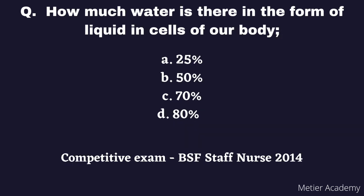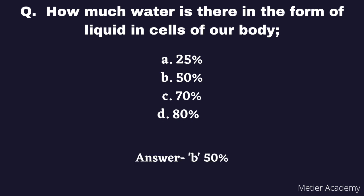The next question is: How much water is there in the form of liquid in cells of our body? Options are: 25%, 50%, 70%, and 80%. This question was asked in the 2014 BSF Staff Nurse exam. The correct answer is Option B, 50%, and it is also a direct question.